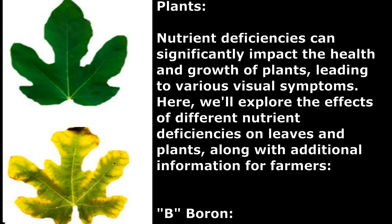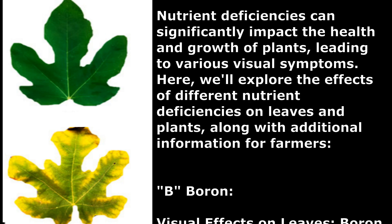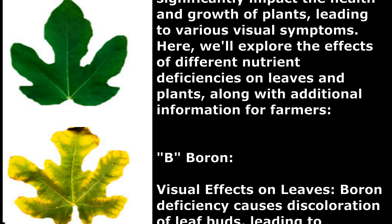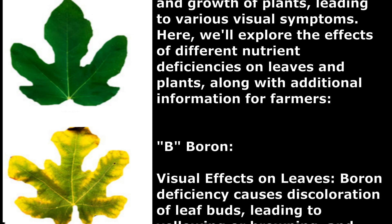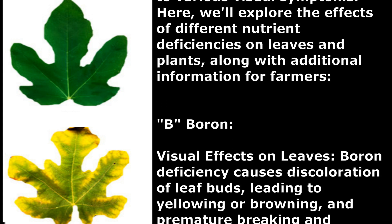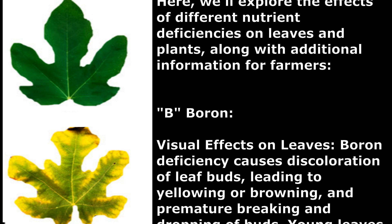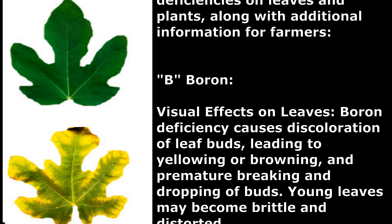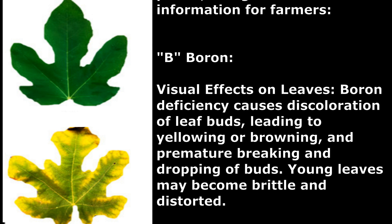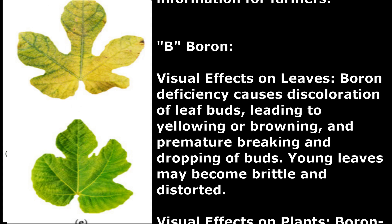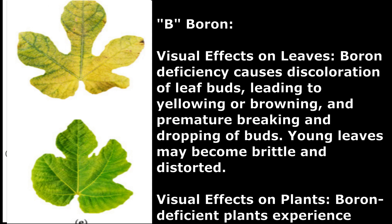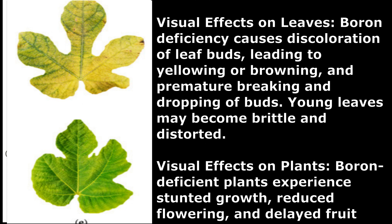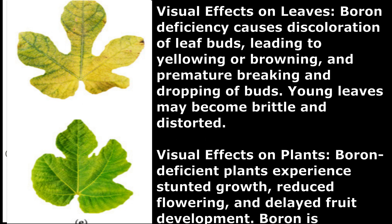Boron. Visual Effects on Leaves: Boron deficiency causes discoloration of leaf buds, leading to yellowing or browning, and premature breaking and dropping of buds. Young leaves may become brittle and distorted. Visual Effects on Plants: Boron-deficient plants experience stunted growth, reduced flowering, and delayed fruit development.